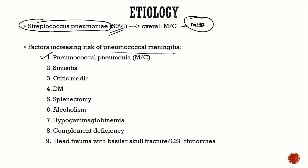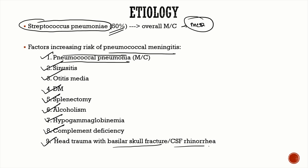The most important risk factor for pneumococcal meningitis is pneumococcal pneumonia. Others include sinusitis, otitis media, diabetes mellitus, post-splenectomy status, chronic alcoholism, hypogammaglobulinemia, complement deficiency, and head trauma with basilar skull fracture or CSF rhinorrhea.